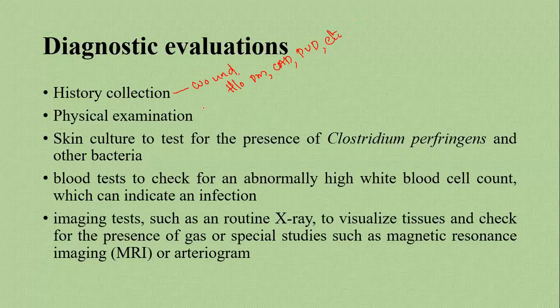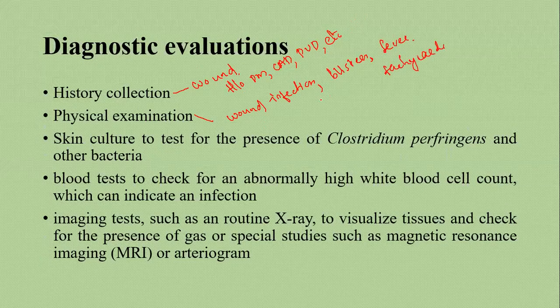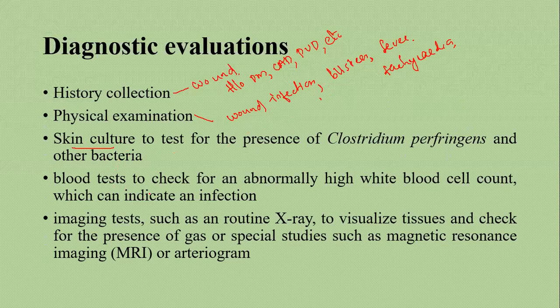On physical examination, assess for wound infection signs — blisters, fever, tachycardia, and signs of blood infection. Check the color of pus and test for the presence of Clostridium perfringens and other bacteria. Blood tests should check for elevated WBC count, as infection will raise white cell count. Imaging studies such as X-rays can visualize tissues and check for presence of gas, and special studies like MRI or arteriogram can assess blood circulation.